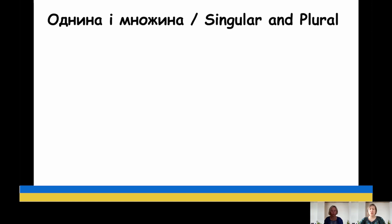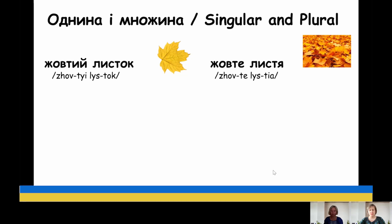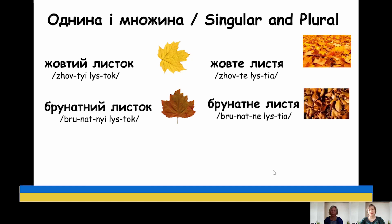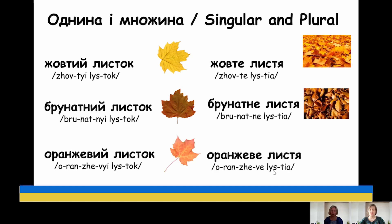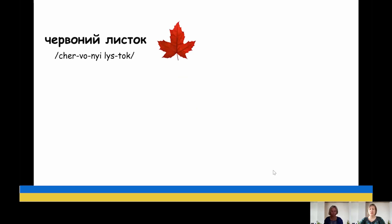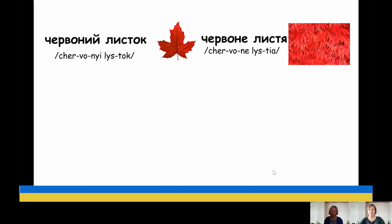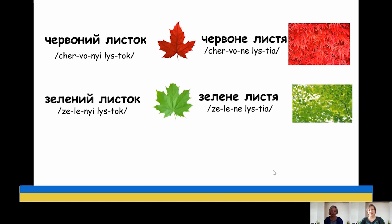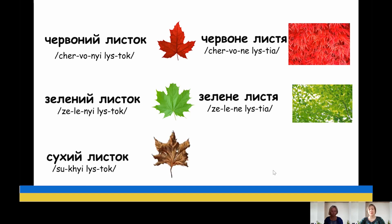Однина і множина. Singular and plural. Жовтий листок — жовте листя. Брунатний листок — брунатне листя. Оранжеве листя. Червоний листок — червоне листя. Зелений листок — зелене листя. Сухий листок — сухе листя.